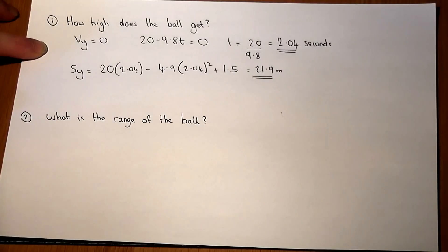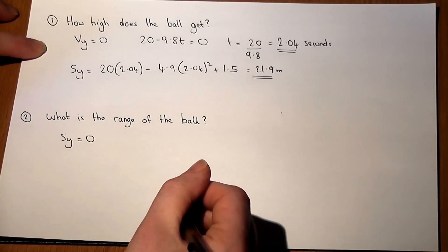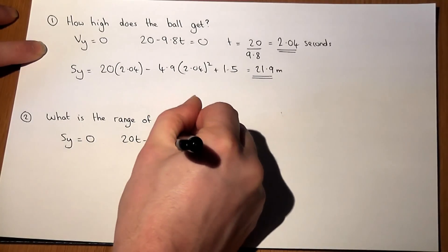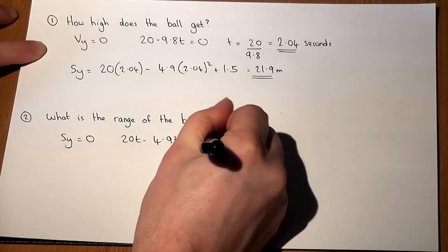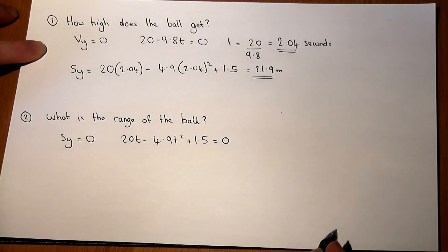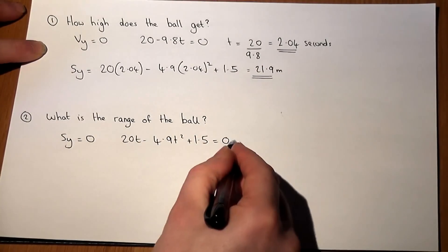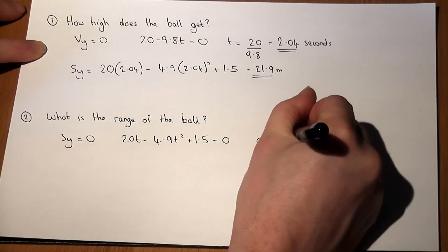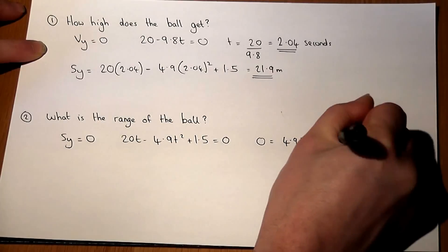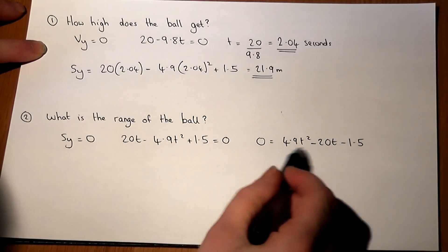So the ball hits the ground when s_y equals zero. So if we can solve when 20t minus 4.9t squared plus 1.5 equals zero, this tells us when the ball gets to its first point. I tend to rearrange this. If I add the terms across the other side, I get zero equals plus 4.9t squared minus 20t minus 1.5, and this is a quadratic equation to solve.